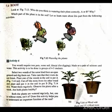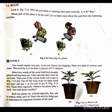Select two weeds of the same kind from an open ground and dig them out. Take care that their roots do not break. Plant one of the weeds in the soil in Pot A. See Figure 7.14.